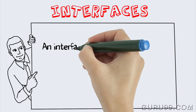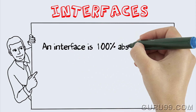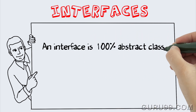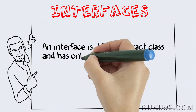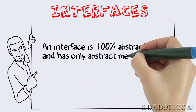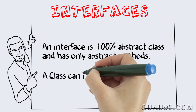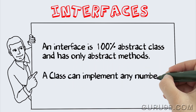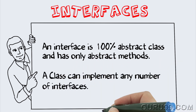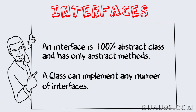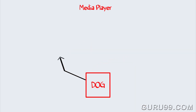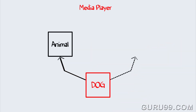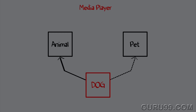So what would you do? The solution is Interface. An interface is a 100% abstract class and has only abstract methods. A class can implement any number of interfaces. Class Dog can extend class Animal and implement Interface Pet. So let's see what happens.